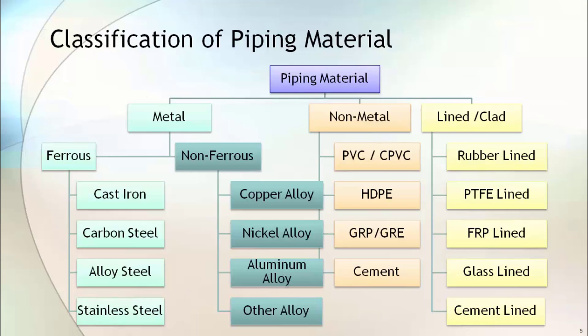Now considering both process and material criteria, you can choose the piping material from the variety of materials available. In this chart, I have listed different types of material that can be used in process piping. Piping material is broadly classified into three categories: metal, non-metal, and lined or clad pipe.